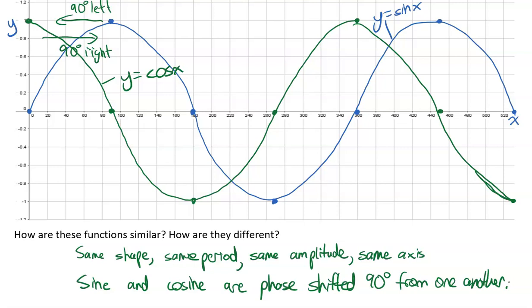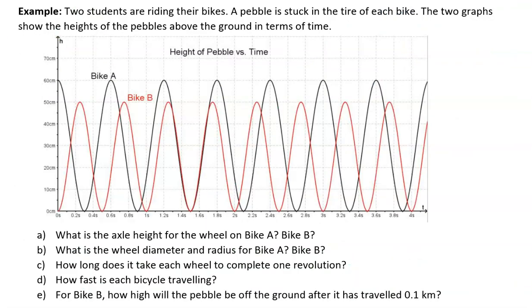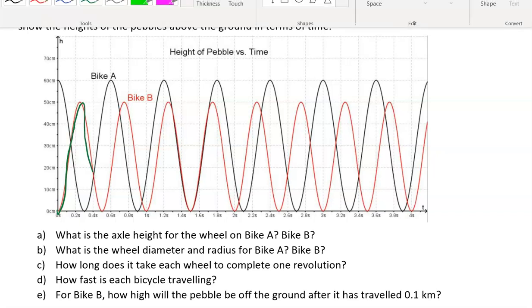Let's move on to an example. This example says two students are riding their bikes. A pebble is stuck in the tire of each bike. The two graphs show the heights of the pebbles above the ground in terms of time. Now, if you have a PDF of this, it might not be colored, so hopefully now that you see the color, it helps you to see it a little bit better. You can see that bike B is this curve right here, and bike A is the taller one with the larger amplitude and the one that goes up higher.